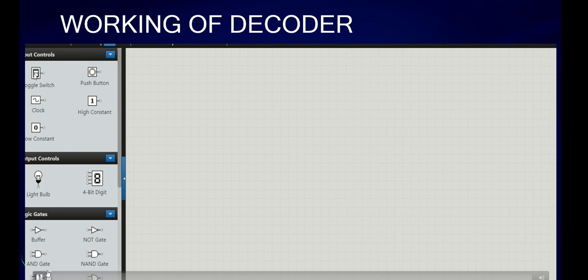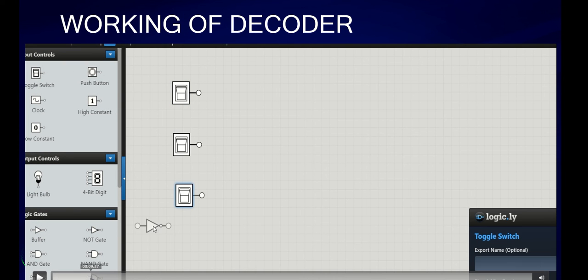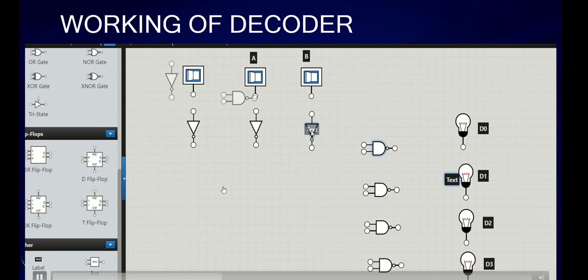Let's see the working of decoder. We will be requiring 3 toggle switches and 3 NOT gates and 4 NAND gates and 4 bulbs to represent the outputs. This is labeled as enable pin, this is a, this is b. And these are d0, d1, d2 and d3.